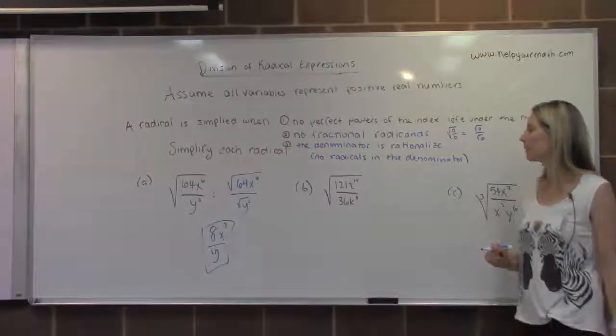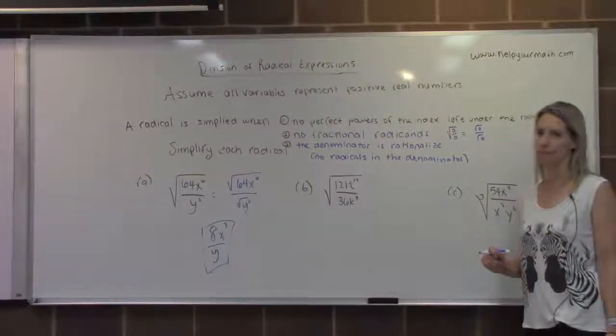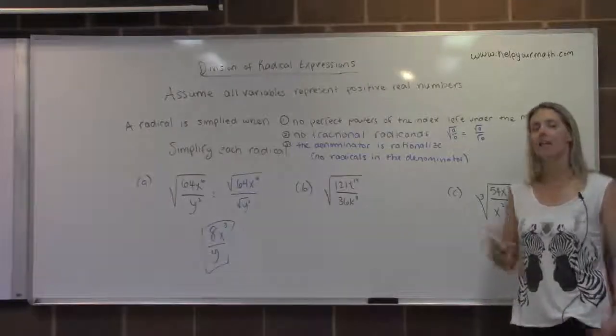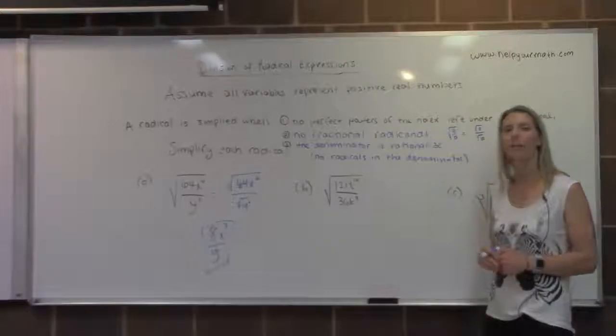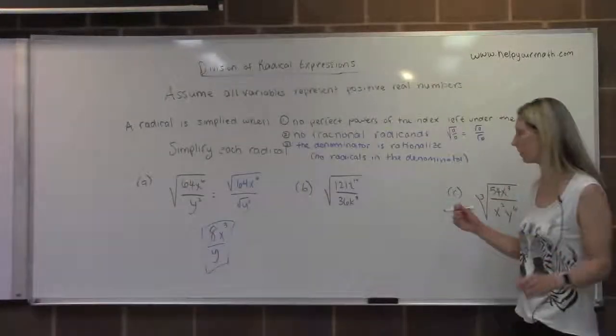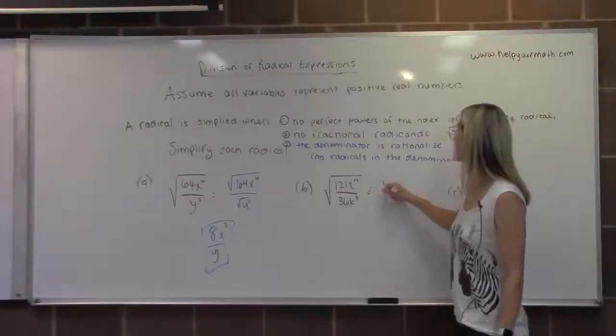In letter b, we have the square root of 121t to the 14th over 36k to the eighth. In this case, 121 and 36 do not have any common factors besides 1, and t and k are not the same variable. So again, I would probably split this up into two.